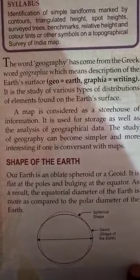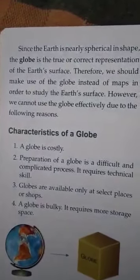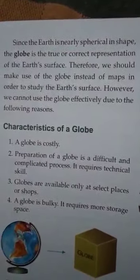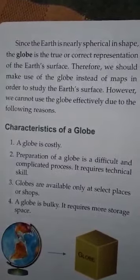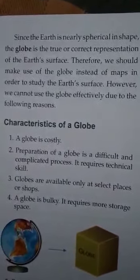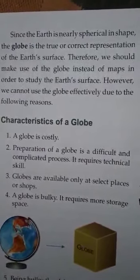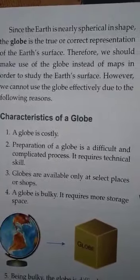You can see that here a globe has been drawn. Let's try to understand what a globe is and how it is useful for us. A globe is actually a model of the earth and it is the true or correct representation of the earth's surface. Instead of maps, if we use a globe, it gives us more information about the earth.